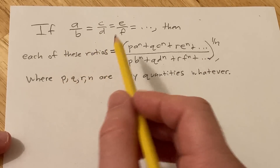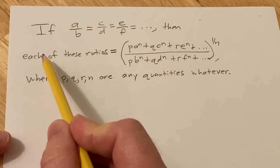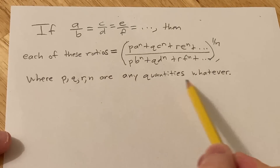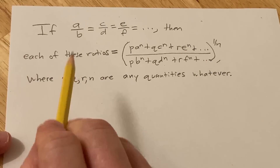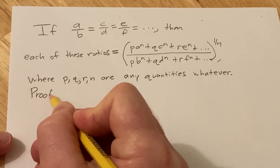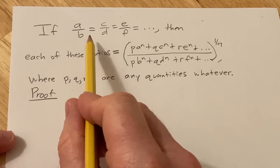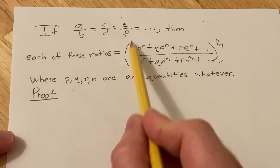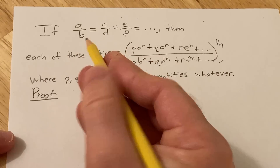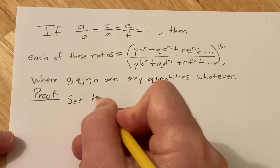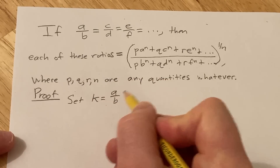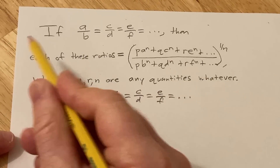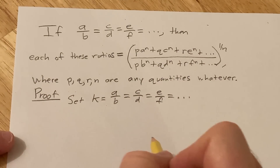So if A over B is equal to C over D is equal to E over F, et cetera, then we're told that each of these ratios is equal to this expression, where P, Q, R, N are any quantities. So let's go ahead and work through the proof. We're going to start by giving this a name, because these are all equal ratios. So let's set K equal to A over B, which is equal to C over D, which is equal to E over F, et cetera. That's the assumption — we assume all of these are equal and give it a name.